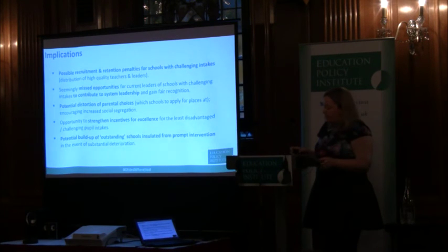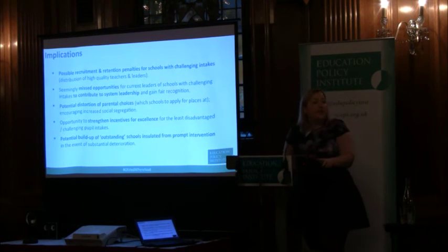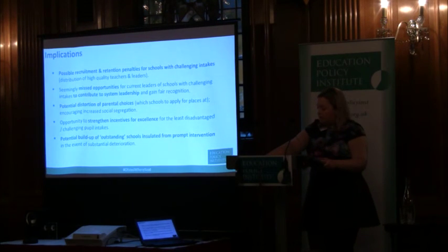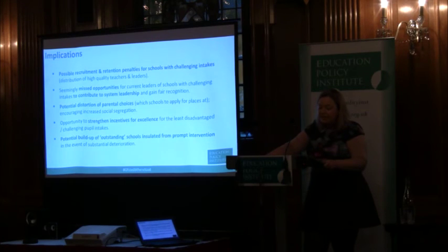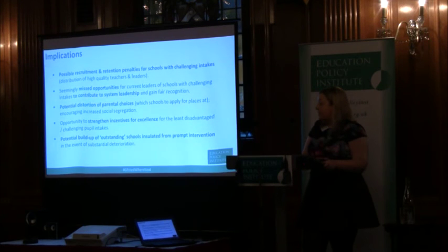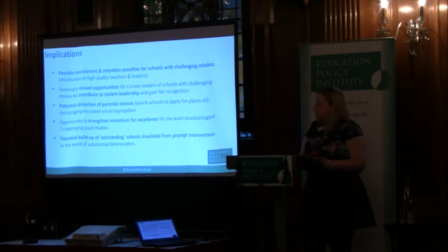Our first implication is the possible impact on recruitment and retention for schools with challenging intakes. This could affect the distribution of high-quality teachers and leaders available to those schools, creating a danger of a self-fulfilling prophecy given the current distribution of Ofsted grades. The second implication is that we appear to be missing some opportunities for current leaders of schools with challenging intakes to contribute to system leadership and gain fair recognition, also leading to an uneven geographic distribution of system leaders and difficulties finding sufficient numbers in certain parts of the country.